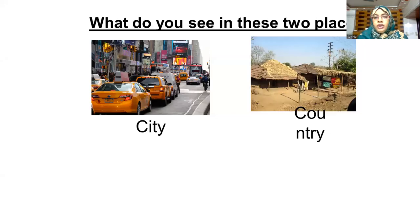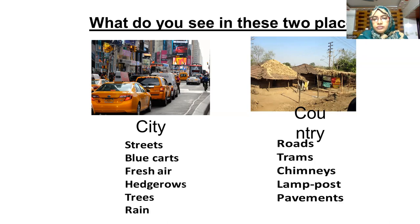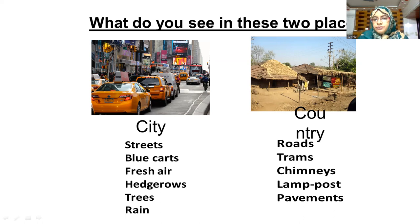What do you see in these two places — in the city and the country? In the city, we can see the elements: streets, blue cars, fresh air, hedgerows, trees, rain. Do you think these are the elements of the city? No. These are the elements of the countryside.